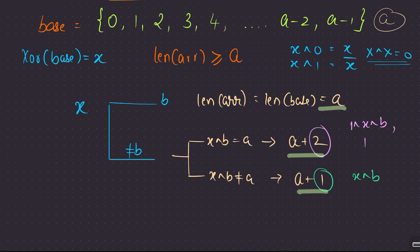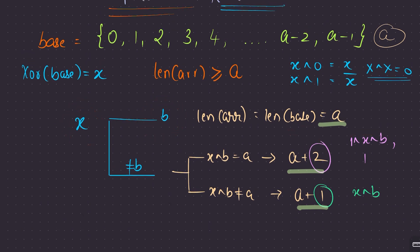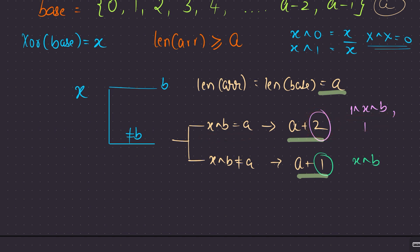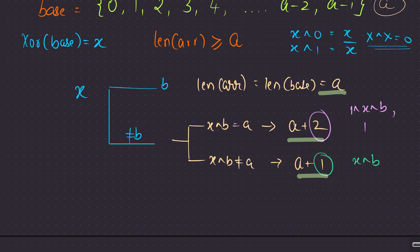Here is the pseudo-code: if XOR of the base array equals b, answer is a. Otherwise, if X XOR b is not equal to a, answer is a plus 1 — just add element X XOR b. But if X XOR b equals a, answer is a plus 2 — add two elements. That's the complete logic.